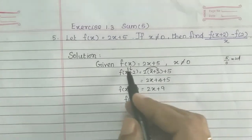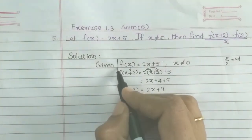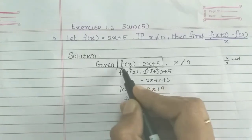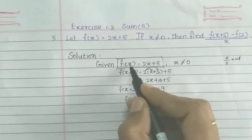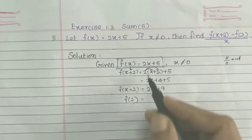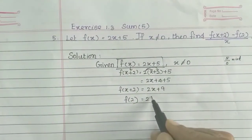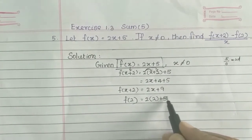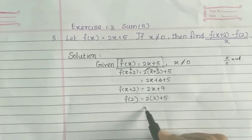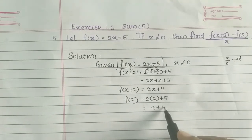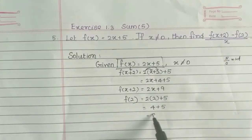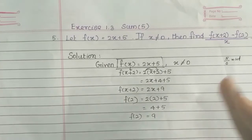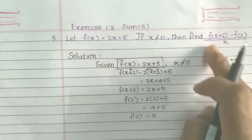Now, for the function f of x equal to 2x plus 5, we find f of 2: 2 times 2 is 4, so 4 plus 5 is equal to 9. So f of 2 equals 9.